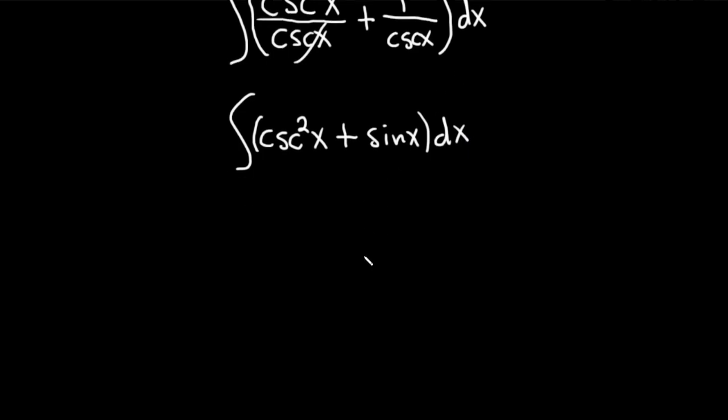And now this shouldn't be too hard to integrate. We just have to think backwards. So the derivative of cotangent is negative cosecant squared. So when you integrate cosecant squared, you'll get negative cotangent of x.